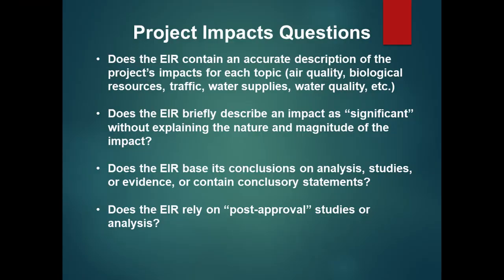Questions I ask when looking at project impacts: Does the EIR contain an accurate description of the project's impacts for each topic area — air quality, biological resources, every special status species that may be present on the site, traffic, water supplies, water quality? Does the EIR simply briefly describe an impact as significant, or does it actually explain why it's significant? Does the EIR base its discussion on actual analysis, studies, or evidence, or just conclusory statements? And does the EIR rely on post-approval studies, or does it actually study the issue before project approval? The idea is informed decision-making with all the evidence in the record beforehand, not after a project is approved.